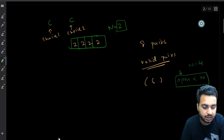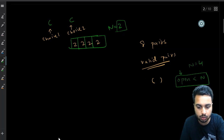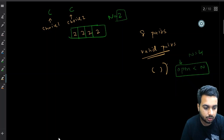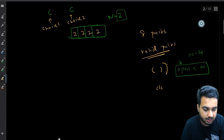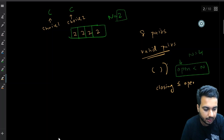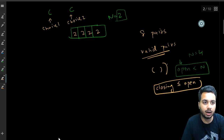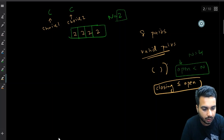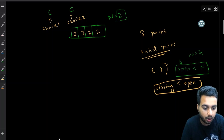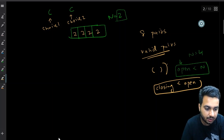Another condition is that it should never be the case that you have more closing brackets than opening brackets — for example 2 opening and then 1 opening and then 2 closing brackets in an invalid order. So your closing brackets should always be less than or equal to opening brackets. If closing is less than opening, then you can add a closing bracket.